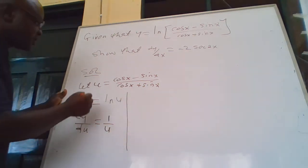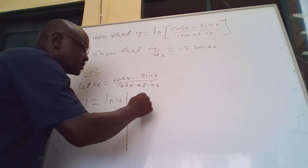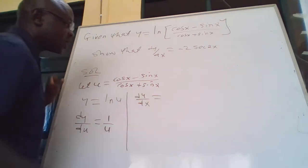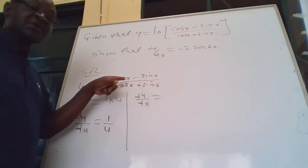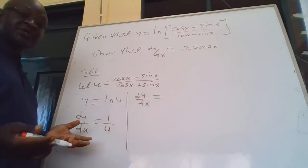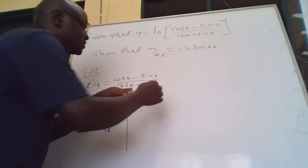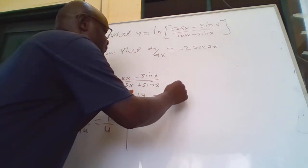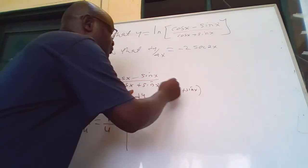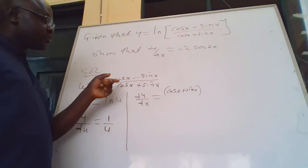We get du/dx. Now we are going to differentiate this one using the quotient rule. We put down the top, we put down the bottom, which is cos x plus sin x, and then differentiate the top.